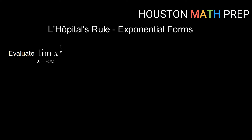If we have the limit as x goes to infinity of x raised to the 1 over x power, then if we try to evaluate that, we get x going to infinity, raising that to 1 over something going to infinity — looks like infinity raised to something like zero. This is one of our exponential indeterminate forms. So what we're going to do to apply L'Hôpital's rule is use properties of logs to get this 1 over x power out of the exponent.